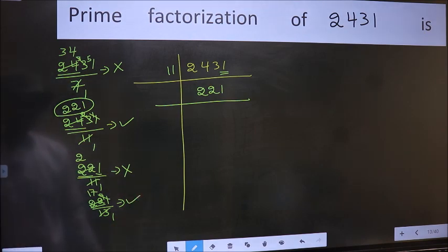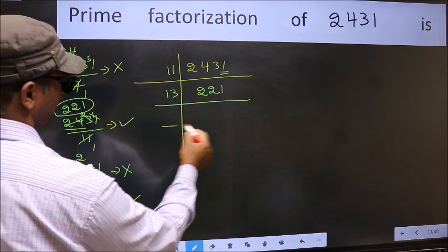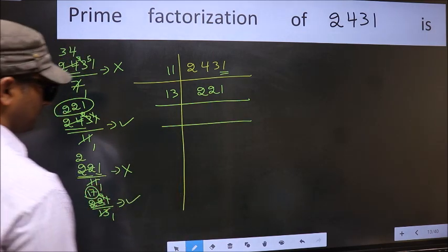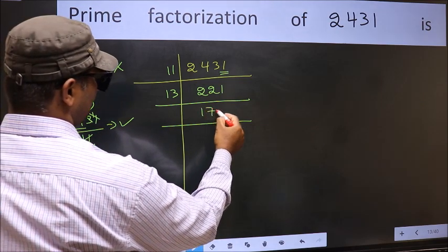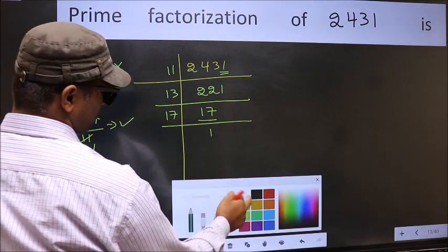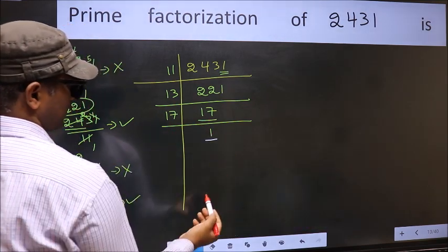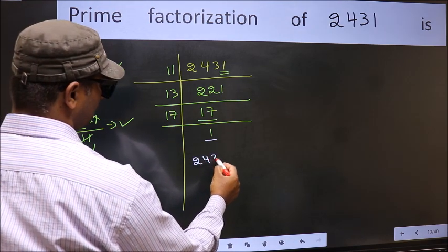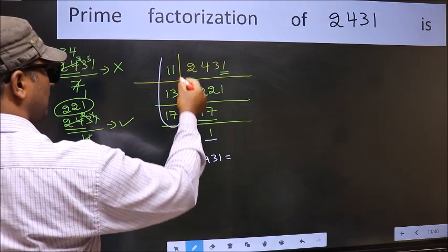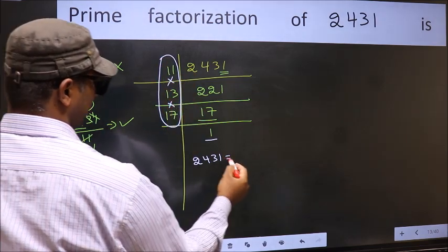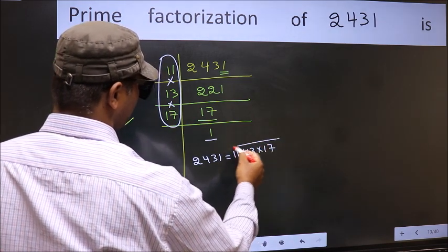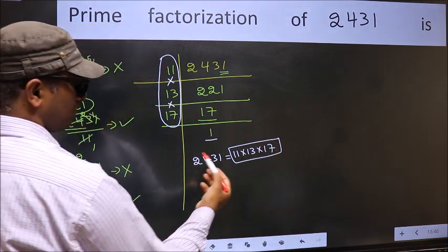So we write 13 here, and the remaining number is 17. Now 17 is a prime number, so 17 × 1 = 17, and we get 1. Therefore, the prime factorization of 2431 is 11 × 13 × 17.